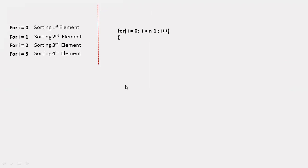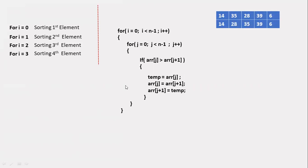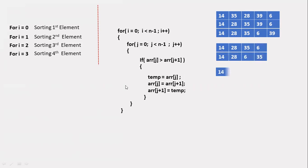With the inner loop, for j equals 0, j less than n minus 1, j plus plus, we perform the sort operation. We compare the first two elements: if ARR[j] is greater than ARR[j+1], we swap them using a temporary variable — temp equals ARR[j], ARR[j] equals ARR[j+1], ARR[j+1] equals temp. This is the swap logic used in bubble sort.